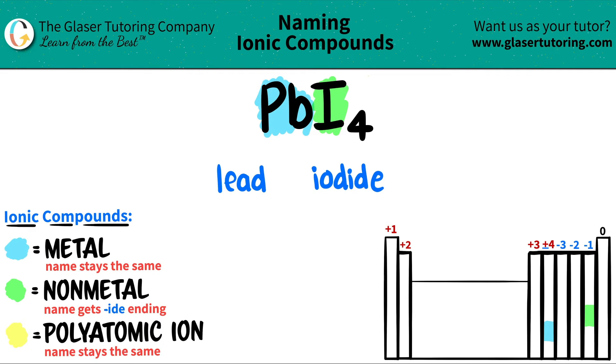But now this is an exception, guys. Even though lead is not in your transitional metals, it's not in this block, we still need a Roman numeral. So highlight this one, guys. Make a star. This is like a post-transitional metal. Lead can have multiple oxidation states. So that's why it needs a Roman numeral.